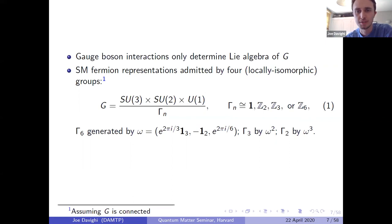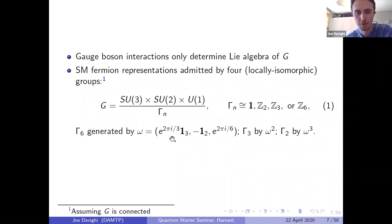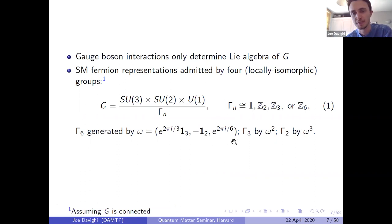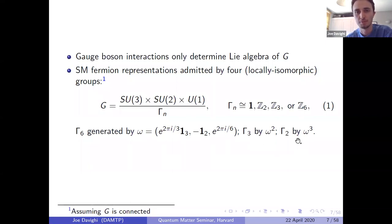To be concrete about how this Z₆ subgroup is embedded: Ω denotes the generator of the Z₆ quotient, corresponding to this element in SU(3) × SU(2) × U(1) — the central order-3 element in SU(3), the central order-2 element in SU(2), and a U(1) phase of 2π/6. The γ₃ quotient is generated by Ω² and the γ₂ quotient by Ω³.